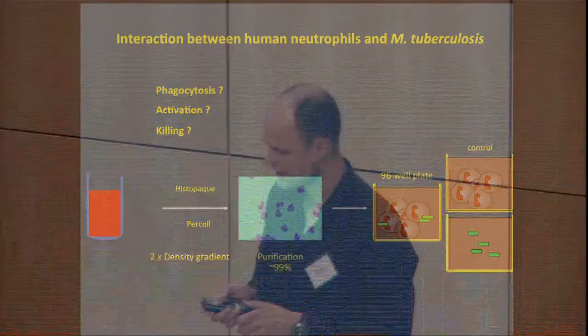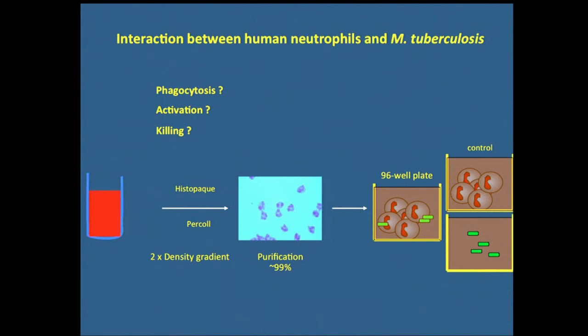Therefore, we studied the interaction of neutrophils and TB in vitro using neutrophils isolated from healthy donors from peripheral blood by density gradient centrifugation, which gave us a purity of about 98 to 99 percent, and then studied them in in vitro cultures by infecting them or not with bacteria.